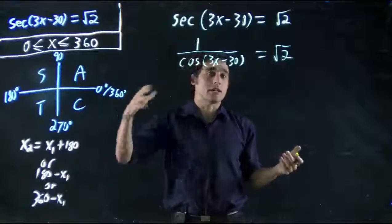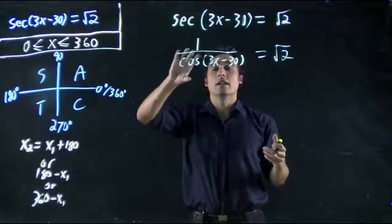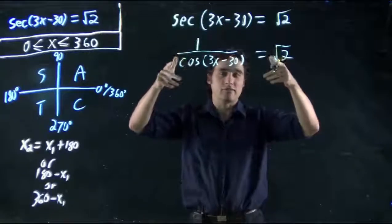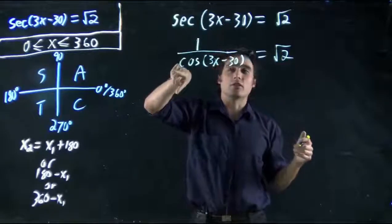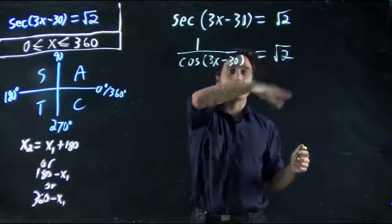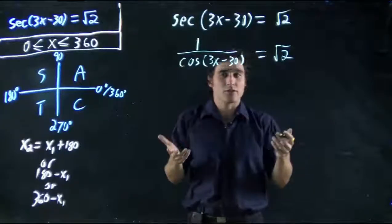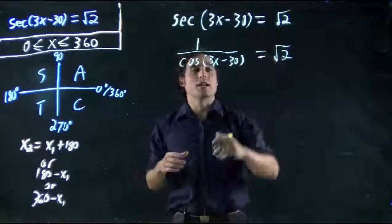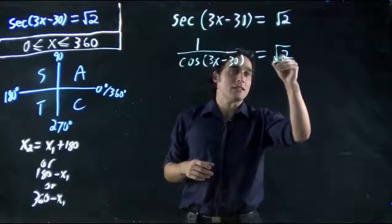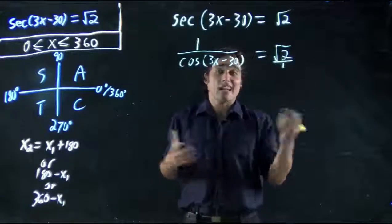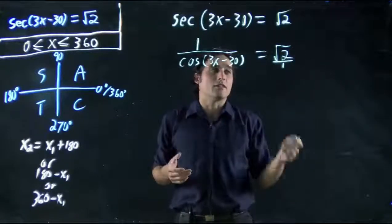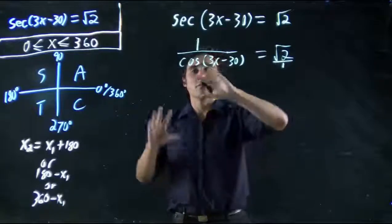Well, now we have a cosine function, like before, we can try and solve. But the trick is, we'd likely want to flip it. We have 1 over, so if we wanted to, we could cross multiply, we could bring this over there, and then divide by square root 2, but why bother? Let's just flip both sides of the equation.